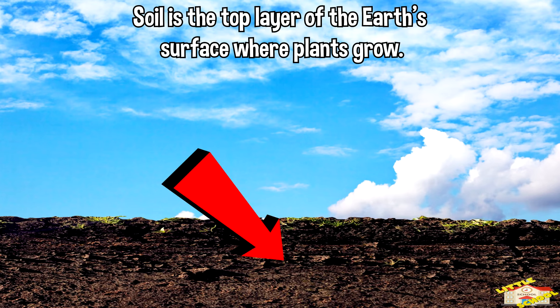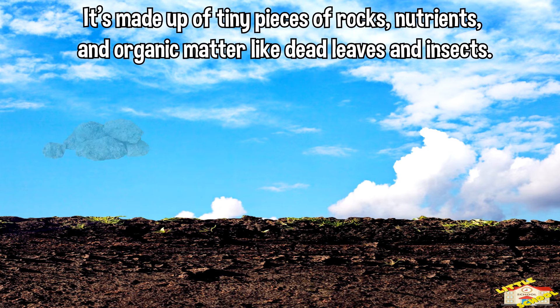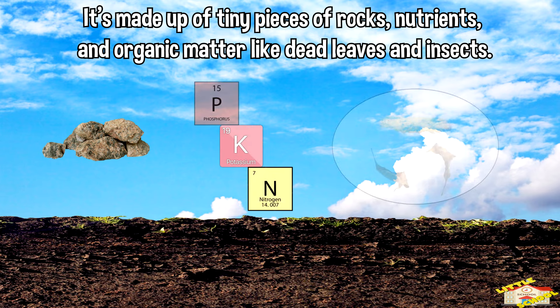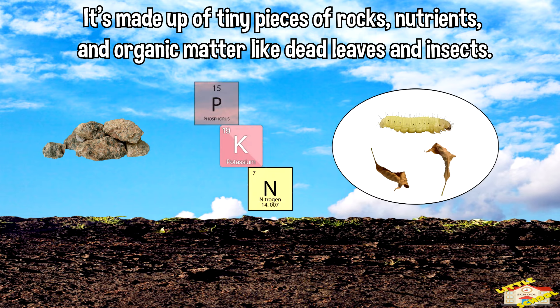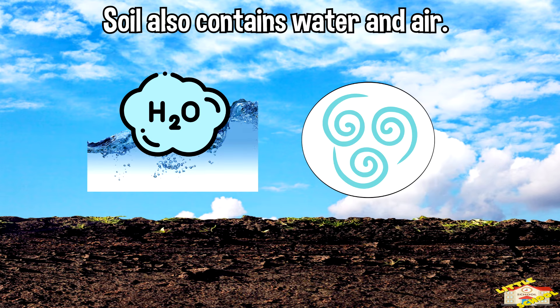Soil is the top layer of the earth's surface where plants grow. It's made up of tiny pieces of rocks, nutrients, and organic matter like dead leaves and insects. Soil also contains water and air.